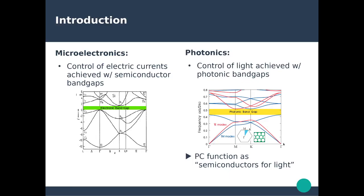The photonic band structure shows the photonic modes available within this periodic structure, and there is a range of energy where no photonic mode is allowed — meaning no optical field can propagate through the structure. This is what we saw when we tuned the frequency of the incoming plane wave from 750 nanometers to 600 nanometers: we fell into the photonic band gap and light was not allowed to propagate through the crystal. So in the end, photonic crystals can be seen as semiconductors for light.